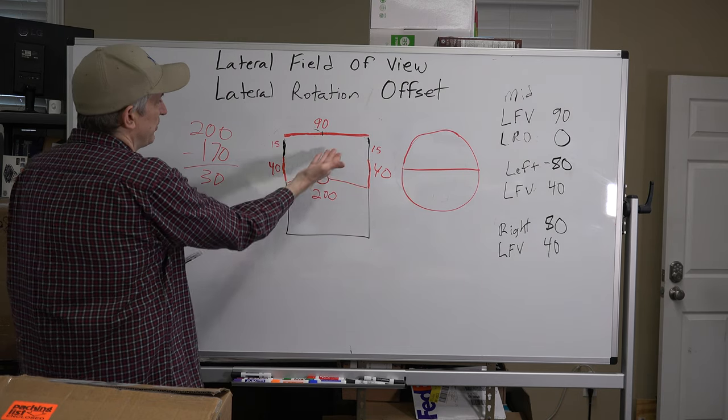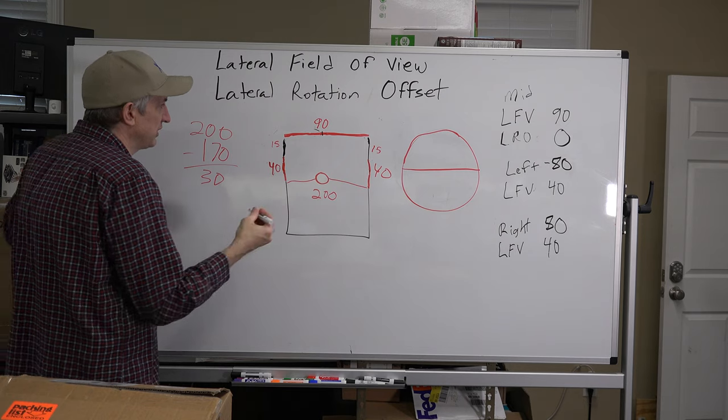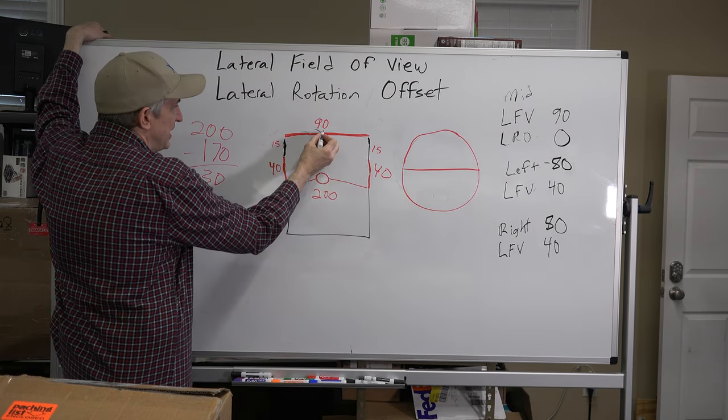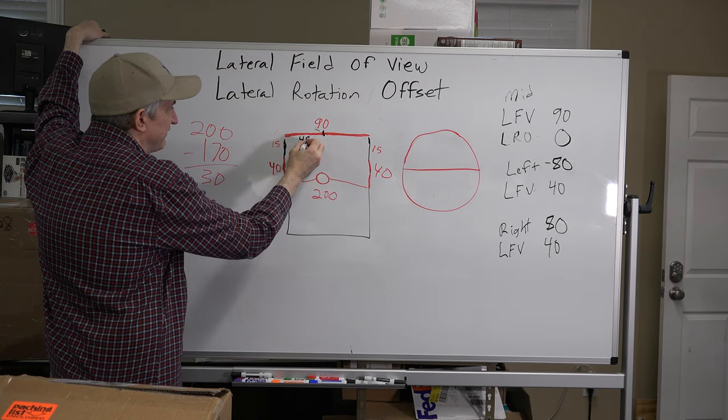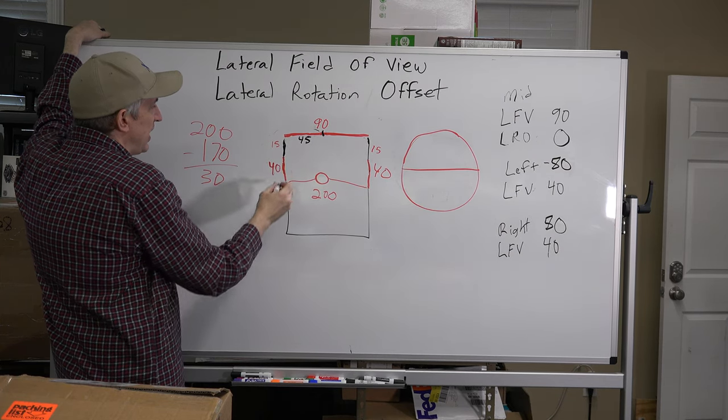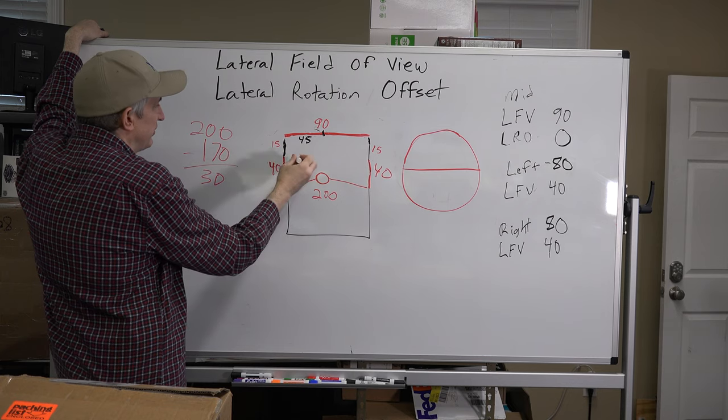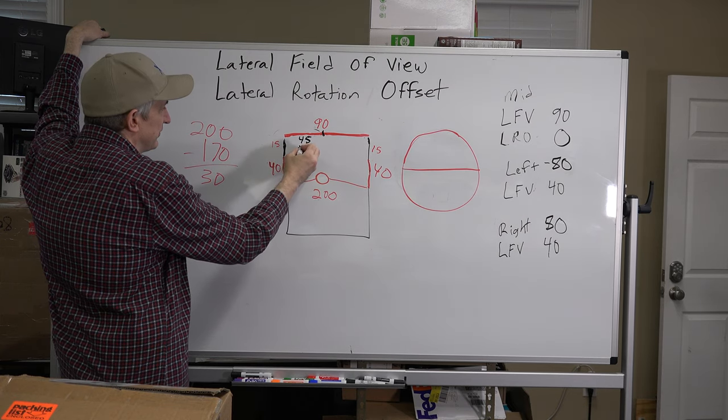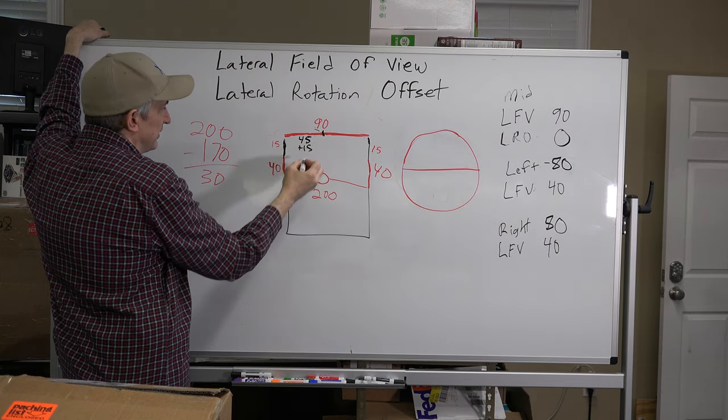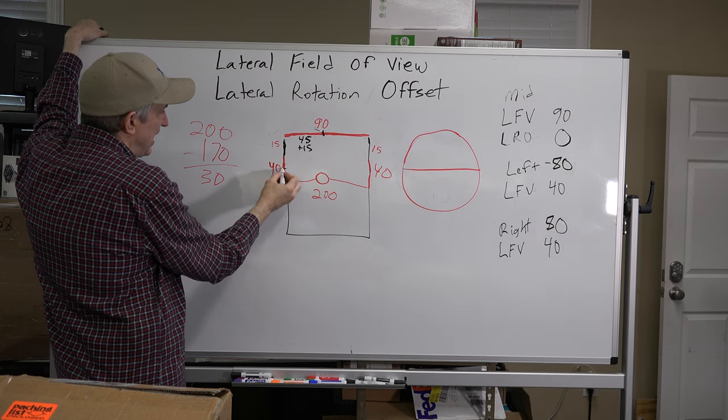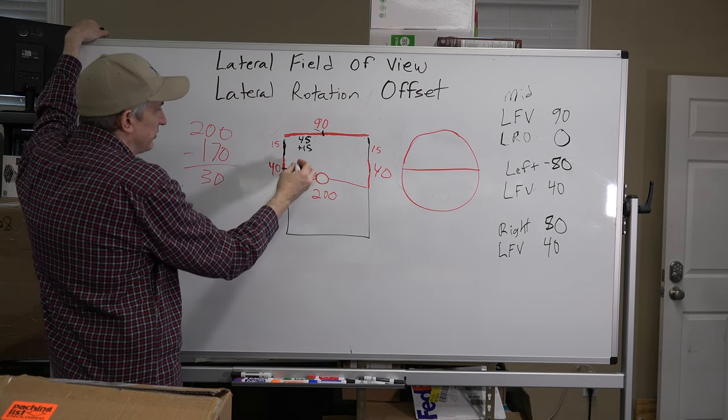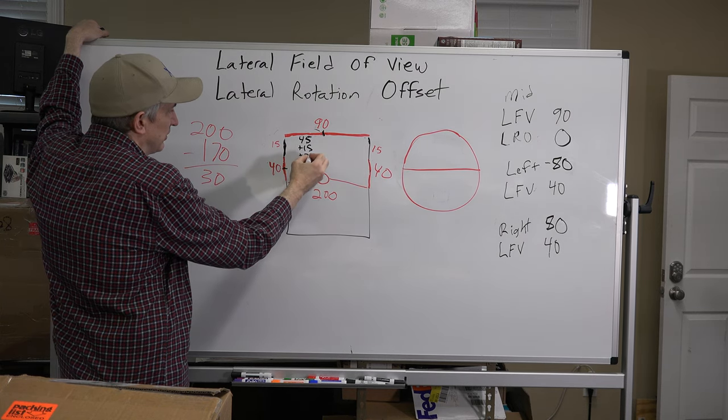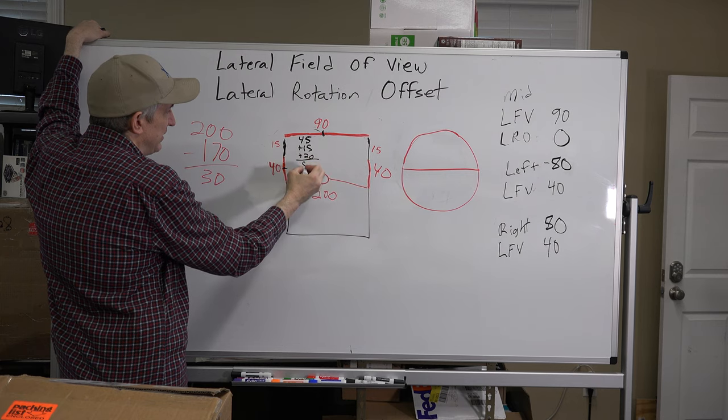The way you come up with how much to rotate the side screen is you take half of the middle screen, which is 45, you add the 15% of dead space, and then you take half, or the center, of the side screen, which is another 20 degrees, which gives you a total of 80.